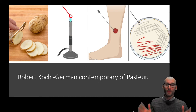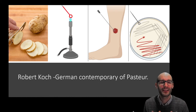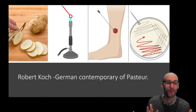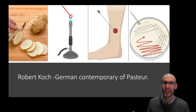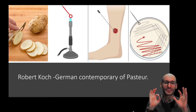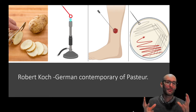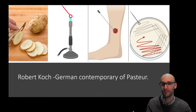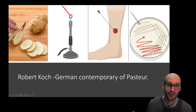Robert Koch was a German contemporary scientist of Pasteur — around the same time as Louis Pasteur — but he was an absolute legend. He developed this whole technique that we call agar plates, and it started with slicing potatoes.